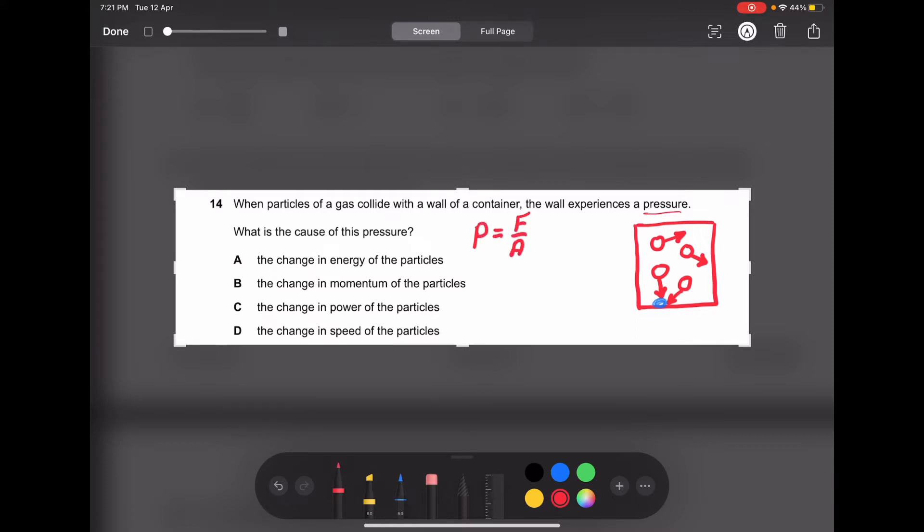Combined forces made by gas particles as they collide with each other and with the wall of the container at the unit cross-sectional area at the point X. This is the smallest one.